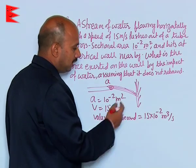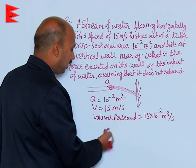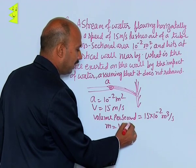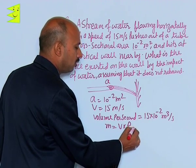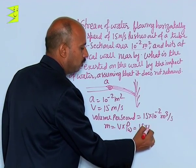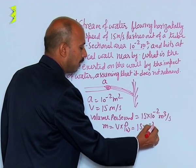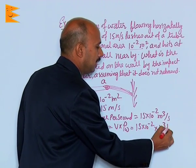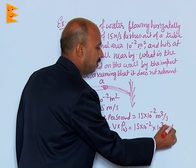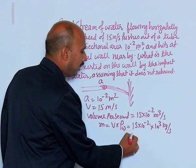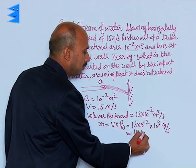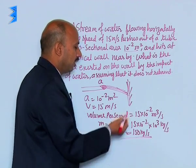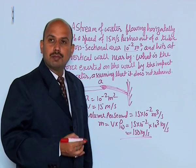So in that case we can calculate the mass. Mass per second is equal to volume into density of water, that is 15 into 10 raised to power minus 2 into 10 raised to power 3 kilograms per second. So that will be 150 kg per second — this much mass is hitting the wall per second.